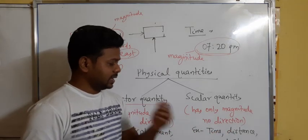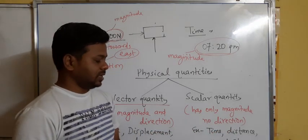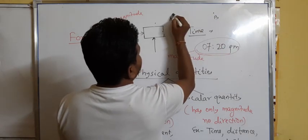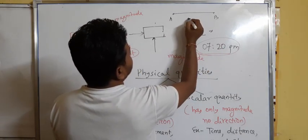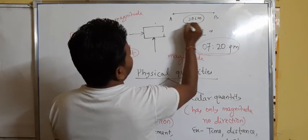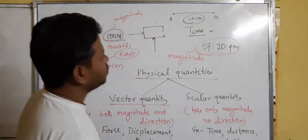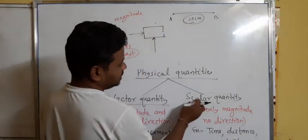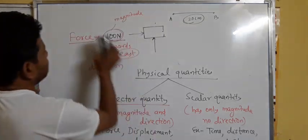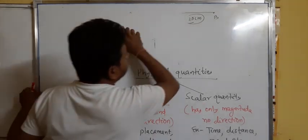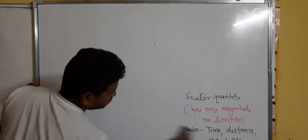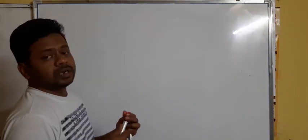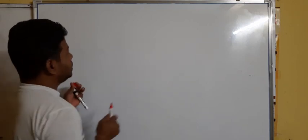Distance is also a scalar quantity. If I ask what is the distance between two points A and B, you will say it is, say, 20 centimeters. The 20 centimeters is the magnitude — it has only magnitude and no direction. Hence, distance is a scalar quantity. Now we will discuss physical quantities one by one, starting from distance.